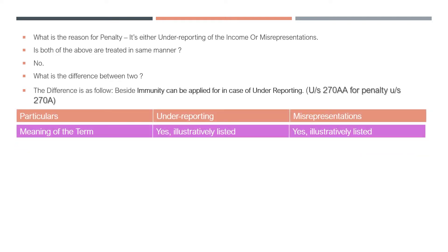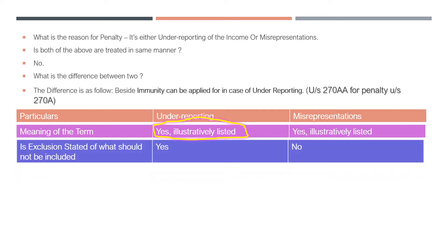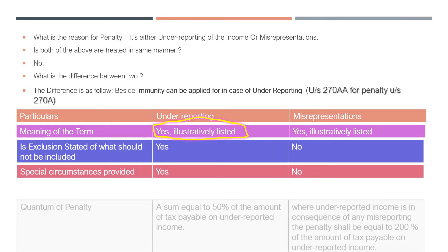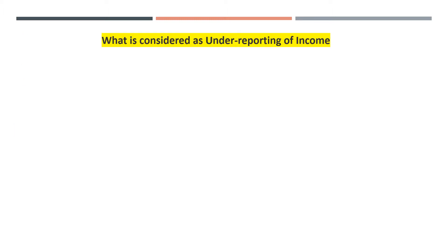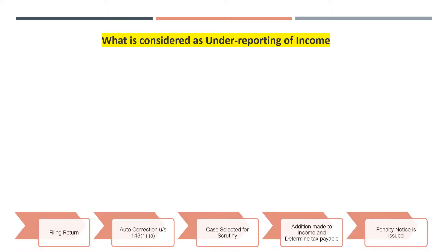Let us understand the difference between underreporting and misrepresentation. Our focus today is on underreporting, whereby an illustrative list has been provided under the act itself. What is excluded from underreporting has been dealt with separately, and the link is available subsequently. With regard to the quantum of penalty, it is 50% of the amount of tax payable.